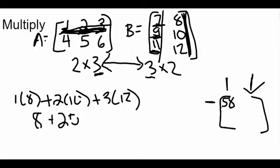Plus 2 times 10 is 20, plus 3 times 12 is 36. So when we add all of this together, so 8 plus 20 is 28, and then 28 plus 36 is equal to 64. So the top right position is a 64.